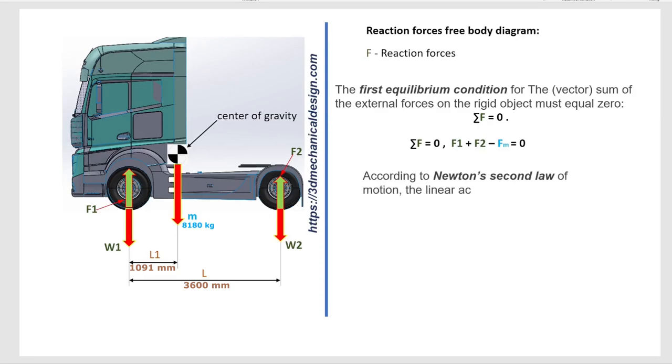According to Newton's second law of motion, the linear acceleration of a rigid body is caused by a net force acting on it. F equals M times G. G, acceleration due to gravity is 9.806 meters per square second.